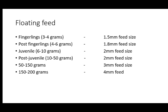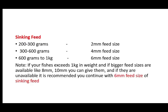When you feed your fish with floating feed up to that level, you are expected to change to sinking feed. For sinking feed: 200 to 300 grams gets 2 mm sinking feed; 300 to 600 grams gets 4 mm. If you have 8 mm or 10 mm available in your area, you can use those. If unavailable, it is recommended you continue with 6 mm sinking feed — there is no problem.